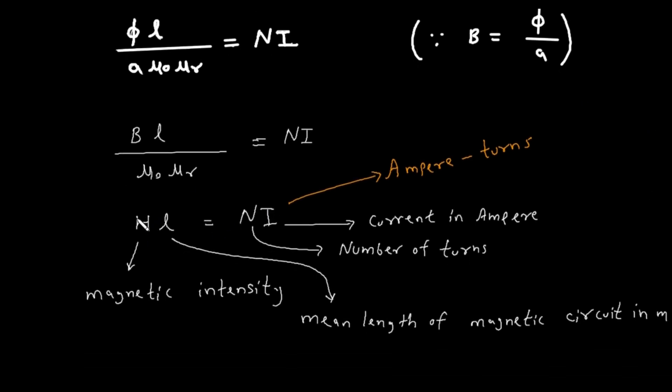Now here this h is the magnetic intensity or magnetic field strength. This l is the mean length of magnetic circuit in meters. n is the number of turns, i is the current in ampere, and this ni is called ampere turns.